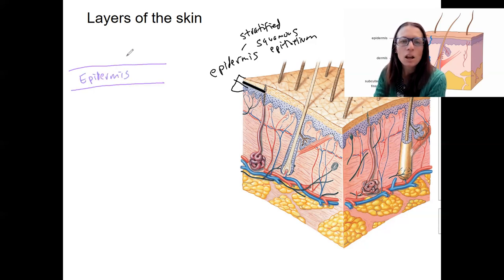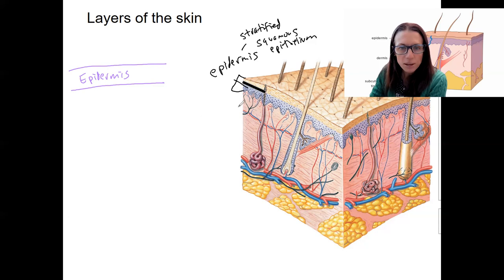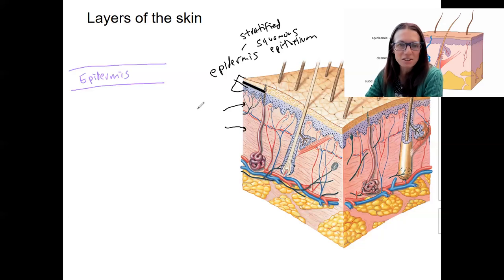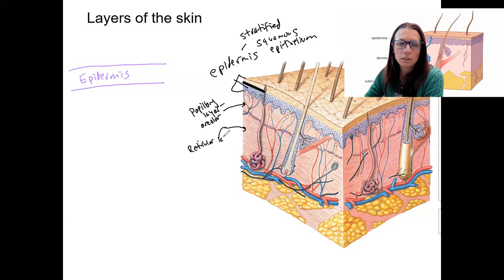Epidermis. Underneath the epidermis, we've got a couple different layers of connective tissue. The top one, just below the epidermis, is the papillary layer, which is made up of areolar tissue. Below that is called the reticular layer, which is made up of dense irregular tissue. These two layers are both connective tissues.